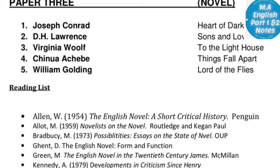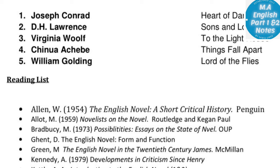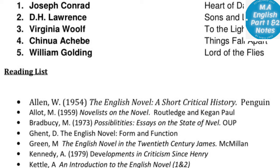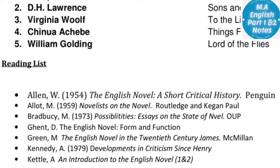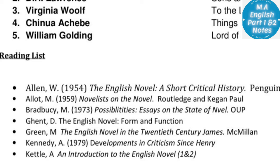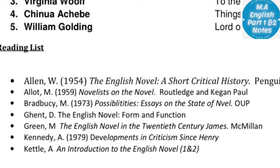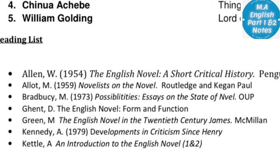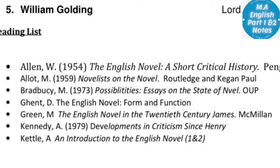First writer is Joseph Conrad and the novel is Heart of Darkness. Sons and Lovers by D.H. Lawrence, To the Lighthouse by Virginia Woolf, Things Fall Apart by Chinua Achebe, and Lord of the Flies by William Golding — all these novels are included. Preparing four of them thoroughly will allow you to attempt the paper very well. Reading list is visible below. You can also read the novels from there; additionally use current notes and NKM notes.